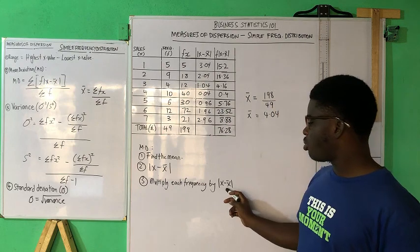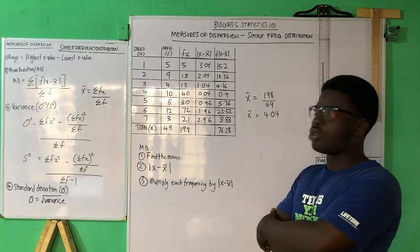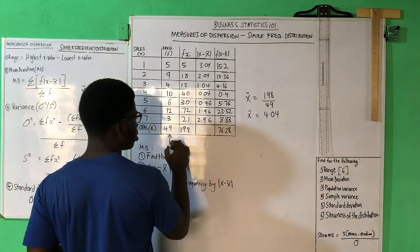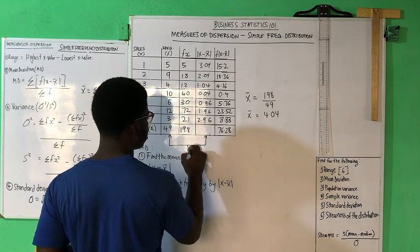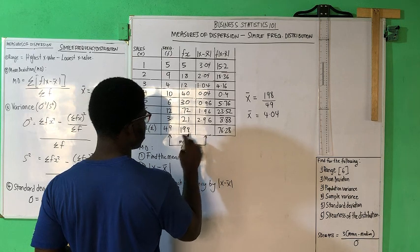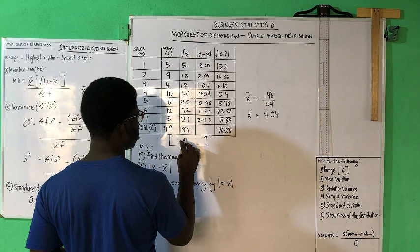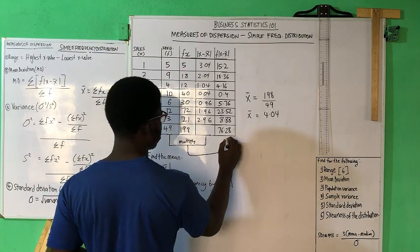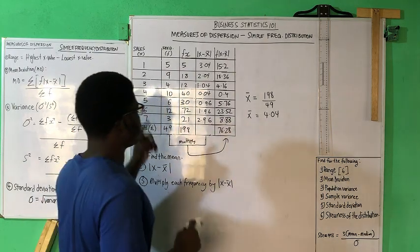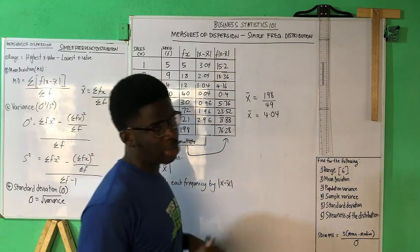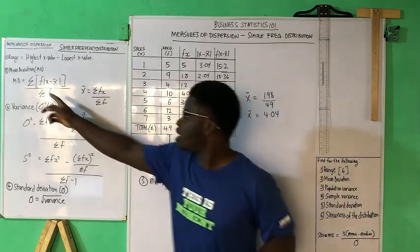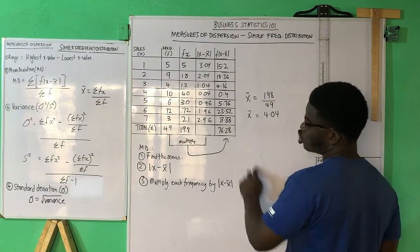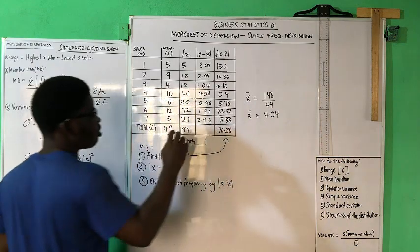Moving on to step three: multiply your frequency by the absolute difference. This gives you f times the absolute difference, which is the numerator in the formula. When you sum all of those products, it gives you 76.28. This 76.28 is the summation of sigma f multiplied by the absolute difference between x and the mean — that is 36.8.